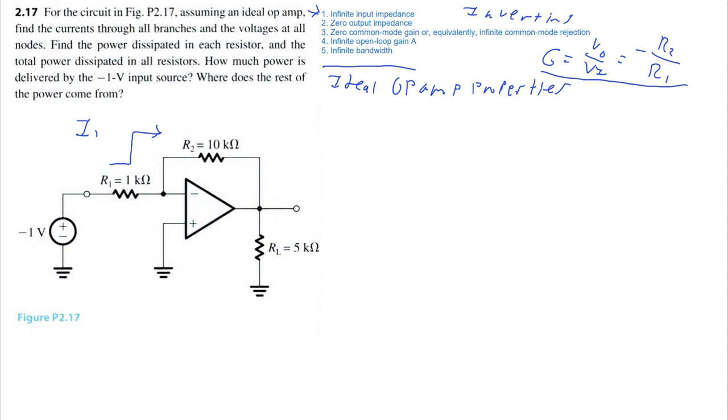We also know another thing. Zero common mode gain. What does this mean? Essentially, if I drew a wire between the negative terminal and the positive terminal, I should have a voltage difference of zero volts. And because I know my positive terminal is grounded at zero, that means this node has zero volts.